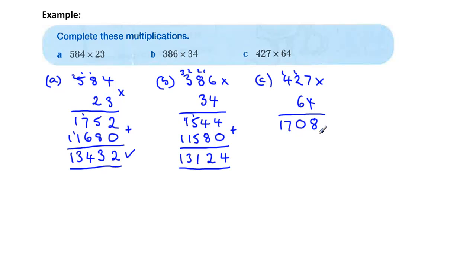Multiplying by six now. So we need our placekeeper because six is in the tens position. Six sevens, 42. Carry our four. Two sixes are 12. And four, 16. Carry our one. Six fours are 24. Plus one, 25.